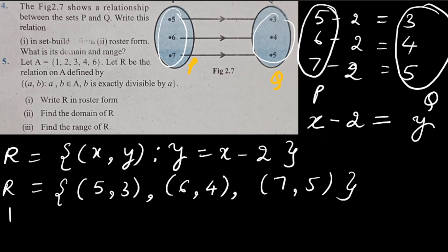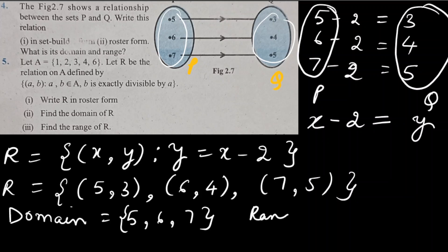Domain (values of x): {5, 6, 7}. Range (values of y): {3, 4, 5}. Co-domain is set Q. Here range and co-domain are the same. With this the 4th question is finished.